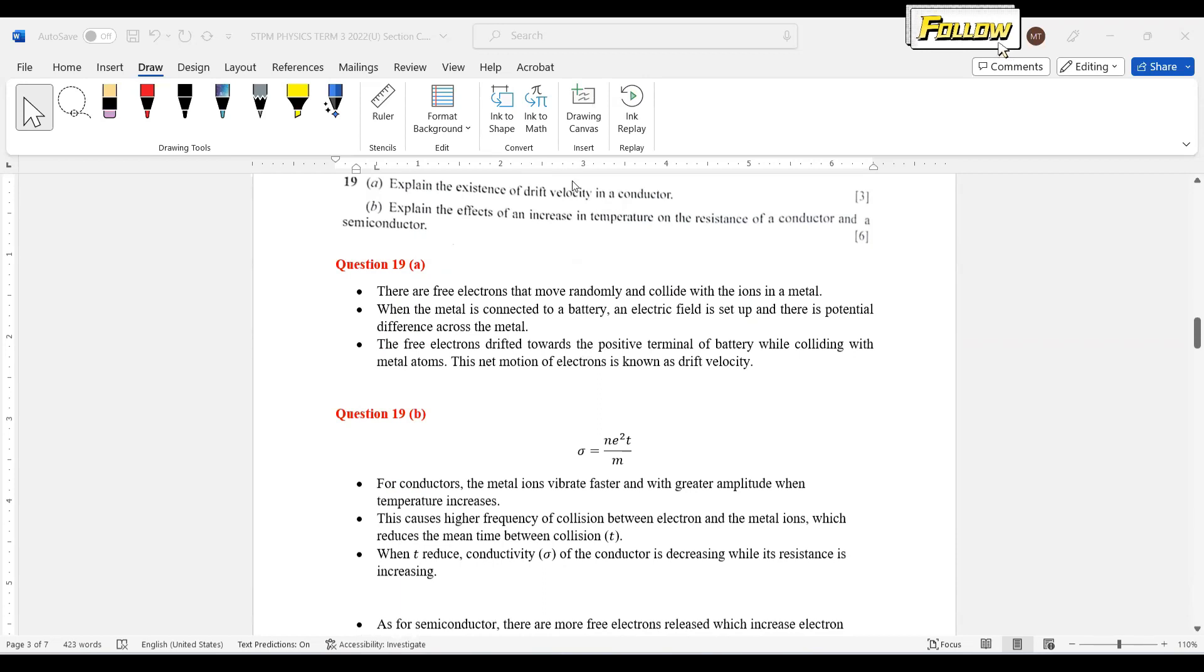The first one about drift velocity is that we have free electrons that move randomly in a metal. So when the metal is connected to a battery, we have an electric field and that causes the free electrons to drift towards the positive terminal of battery while still continuing to collide with the metal atoms. So the net motion of electrons towards the positive terminal, that is the drift velocity.